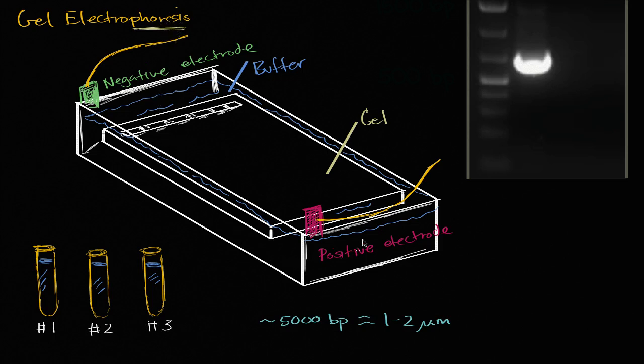Well here is our setup right over here. We have our gel that's embedded in a buffer solution. So this gel, the most typical one is agarose gel, that's a polysaccharide that we get from seaweed. And it's literally a gel, a gelatinous material.